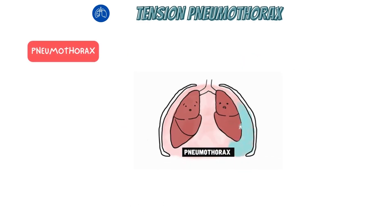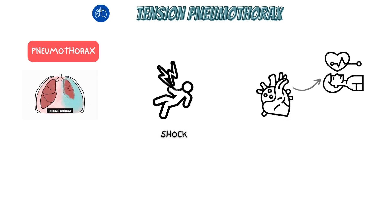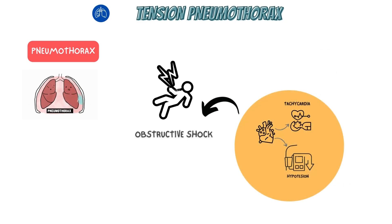An important thing to remember about tension pneumothorax is it doesn't just affect the lung. In addition to respiratory impairment, our patients are going to have shock. Impaired venous return and mechanical compression of the heart prevent normal cardiac output. So these patients are going to be tachycardic, they may be hypotensive, and tension pneumothorax represents a form of obstructive shock. We want to look not only for evidence of pulmonary compromise, but also for evidence of circulatory compromise.